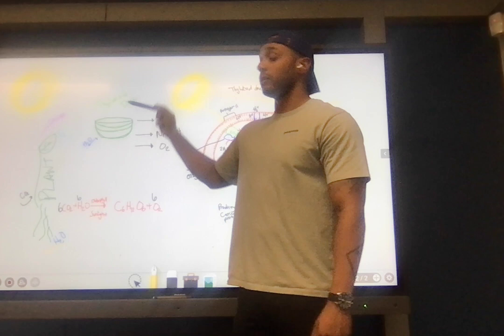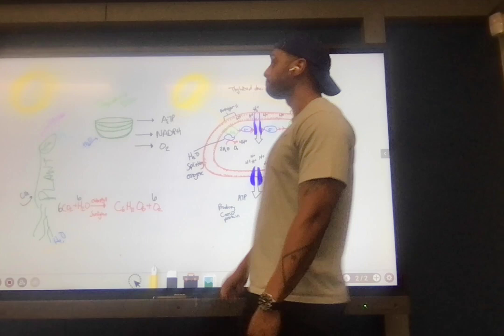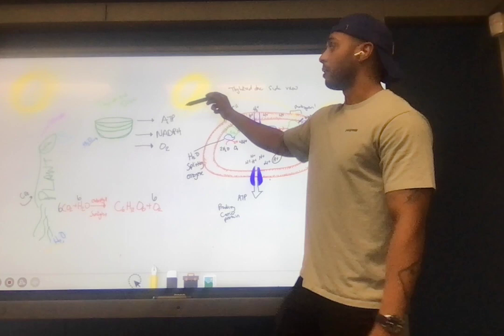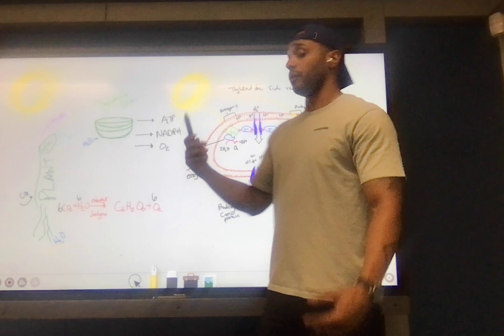Moving on to a high school level, we have our thylakoid disc, which reside within the chloroplast that exists within every leaf and within plant. Again, our water source remains the same, byproducts being ATP, NADPH, and O2.